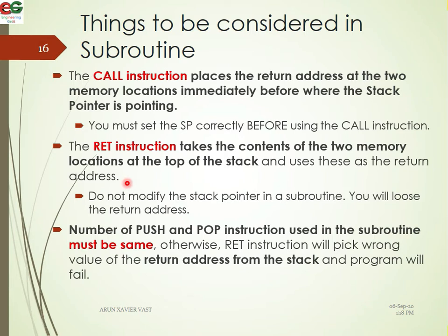Those two bytes are copied to the PC and the main program resumes. The number of PUSH and POP instructions used in the subroutine must be the same. Otherwise, the data will be corrupted and the return instruction will pick the wrong value of the return address from the stack, causing the program to fail.